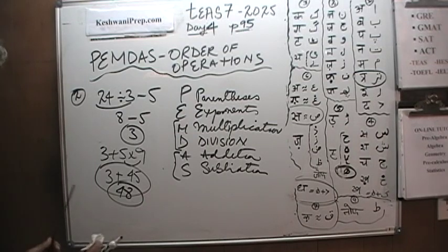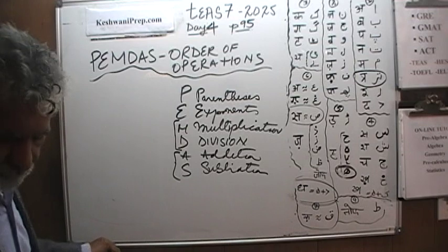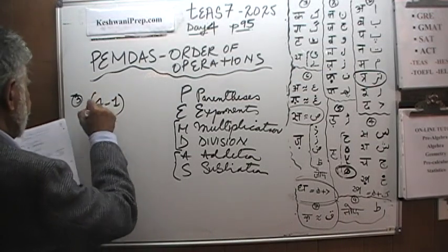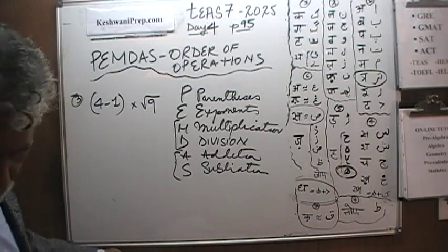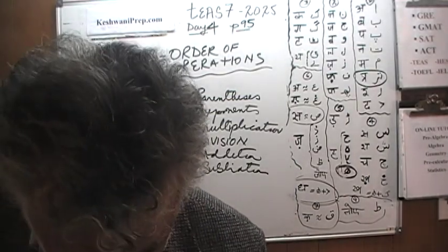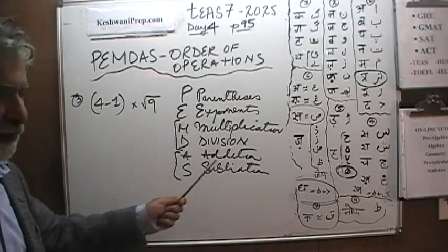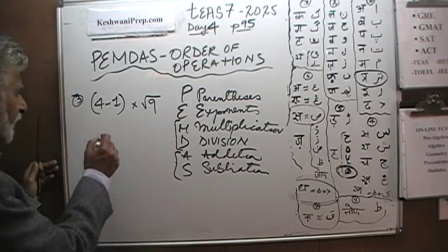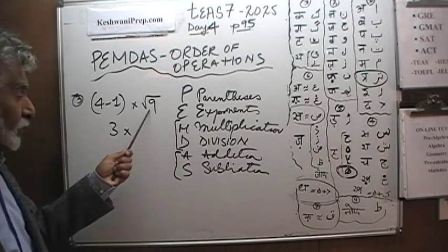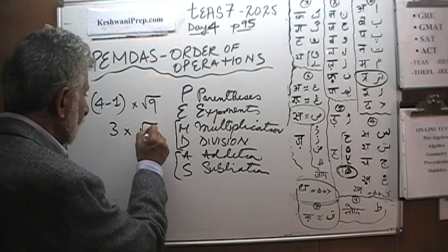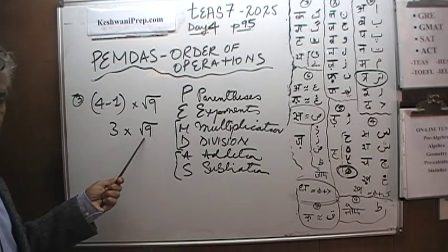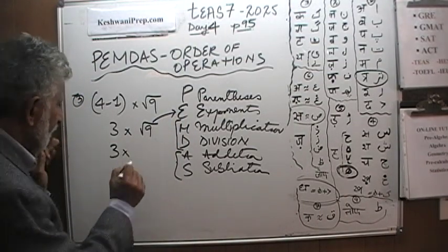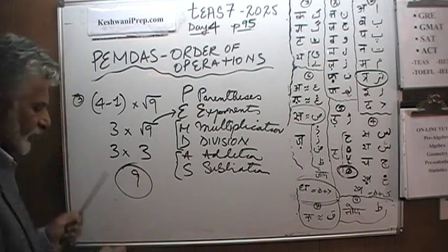Let's do the next one, shall we? Number 3 says 4 minus 1 times root 9. What do we do first? Well, we do whatever it says here. The very first thing we are supposed to do is parentheses. There is a parentheses right there. 4 minus 1, we do it first. So that becomes a 3. And root 9. And now root, whenever you have to take the root, root is exponent. So we do that next. So 3 times root 9, root of 9 is 3. 3 times 3 is 9. The final answer is 9.